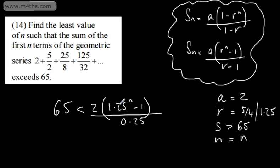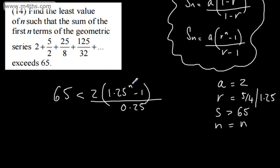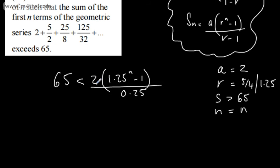This is what we've got. We've got an inequality, and we need to solve for the unknown n. This is going to need logarithms. Let's just tidy it up first. 2 divided by a quarter is 8. 65 over 8 is going to give us 8.125. So, 8.125, and that will be less than 1.25 to the power of n minus 1. Adding 1 to both sides, 9.125, and that now will be less than 1.25 to the power of n.